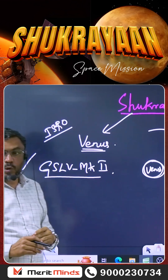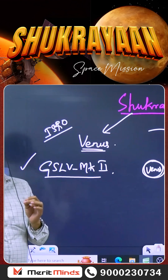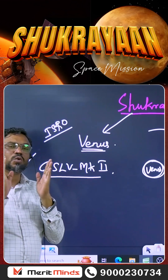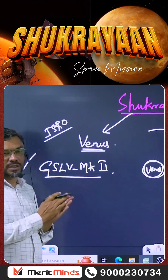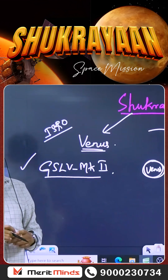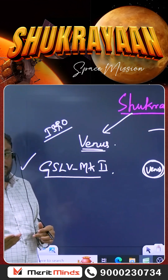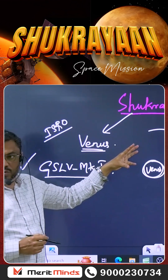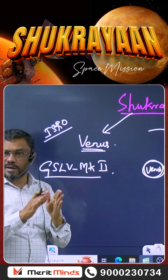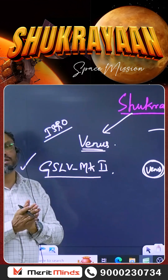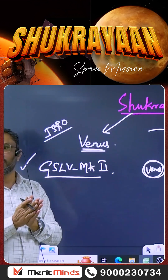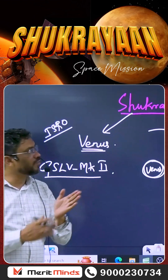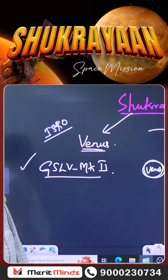The main objective of this Venus Orbiter Mission, or Shukrayaan, launched by GSLV Mk2, is the comprehensive study of the planet Venus. Similar to how Mars Orbiter Mission was conducted, a mission to Venus is also planned. The objectives include studying Venus's morphological features, Venus atmosphere, and mineralogy.